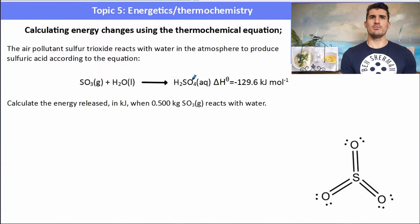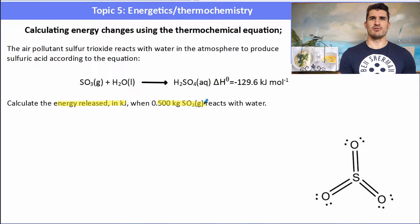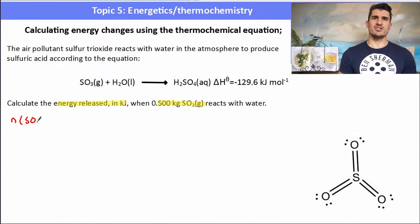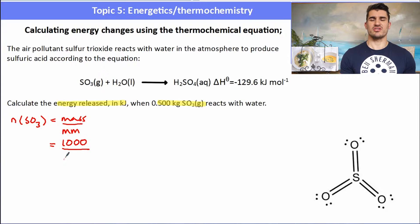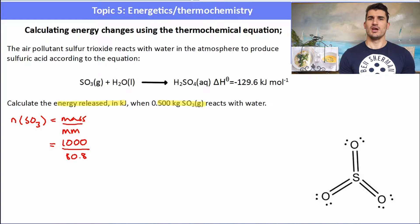Here's an example: one mole of sulfur trioxide plus one mole of water forms one mole of sulfuric acid, and in the process it releases 129.6 kilojoules of energy. We need to calculate the energy released when only half a kilogram of sulfur trioxide reacts with water. We start by finding the number of moles of sulfur trioxide — mass over molar mass.